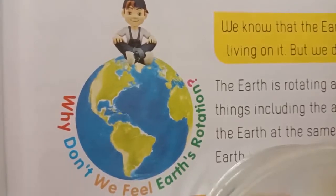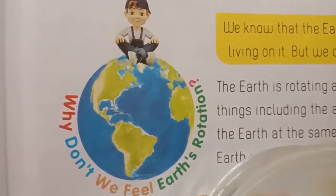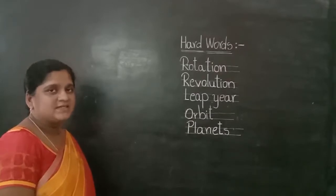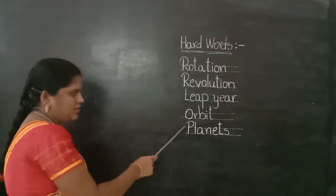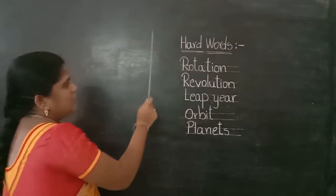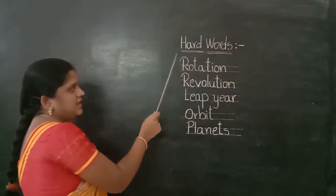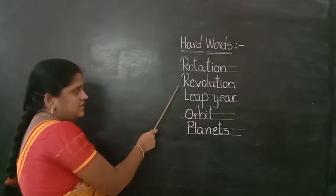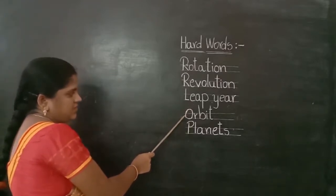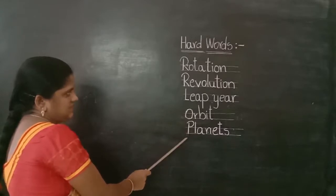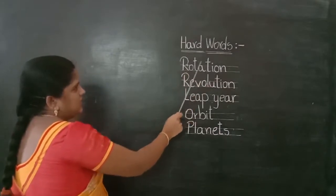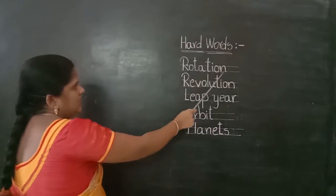Key vocabulary: rotation, revolution, leap year, astronomers. Today's home task — learn and write these hard words three times. First: rotation — R-O-T-A-T-I-O-N.